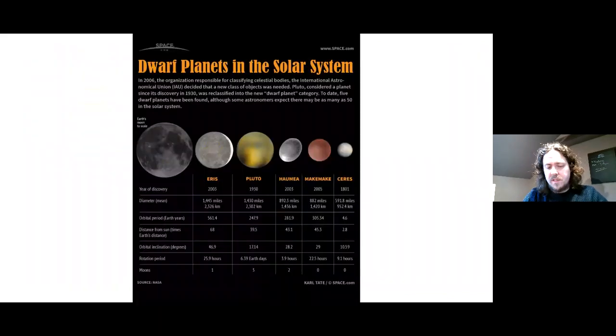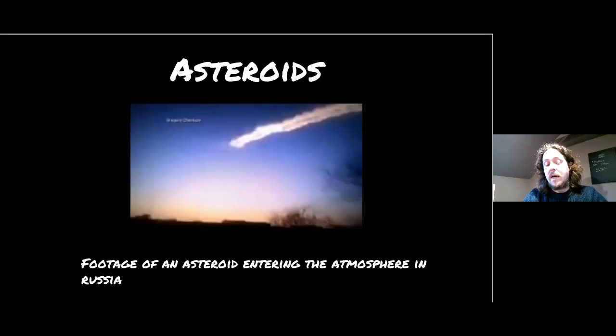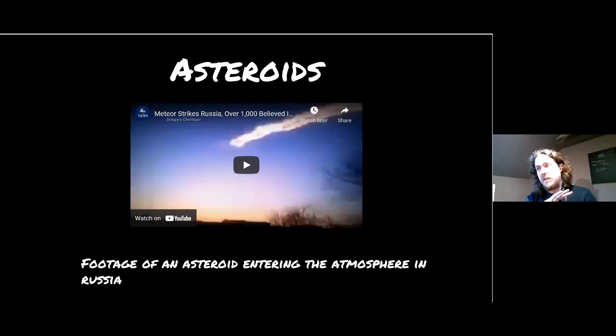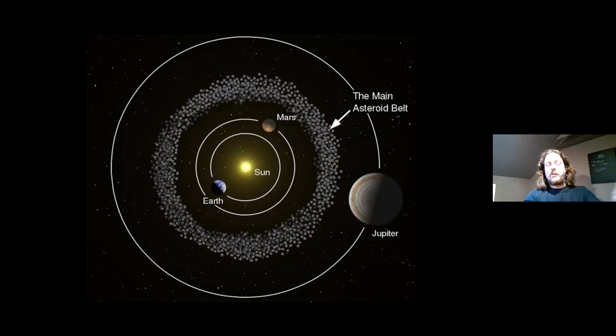There is some suggestion that Jupiter might have had something to do with creating the asteroid belt due to its large gravity. The asteroid belt is located between Mars and Jupiter. So that's where we've got this band of asteroids.